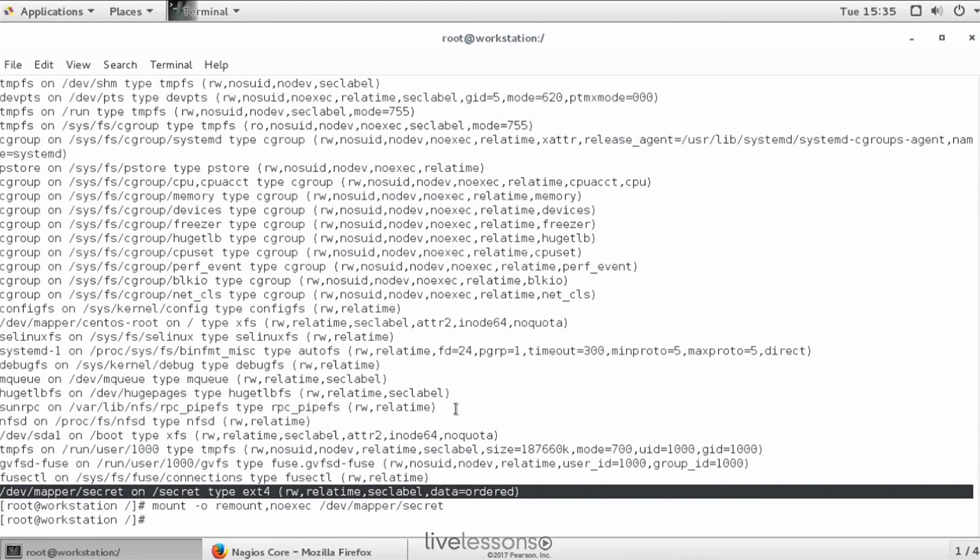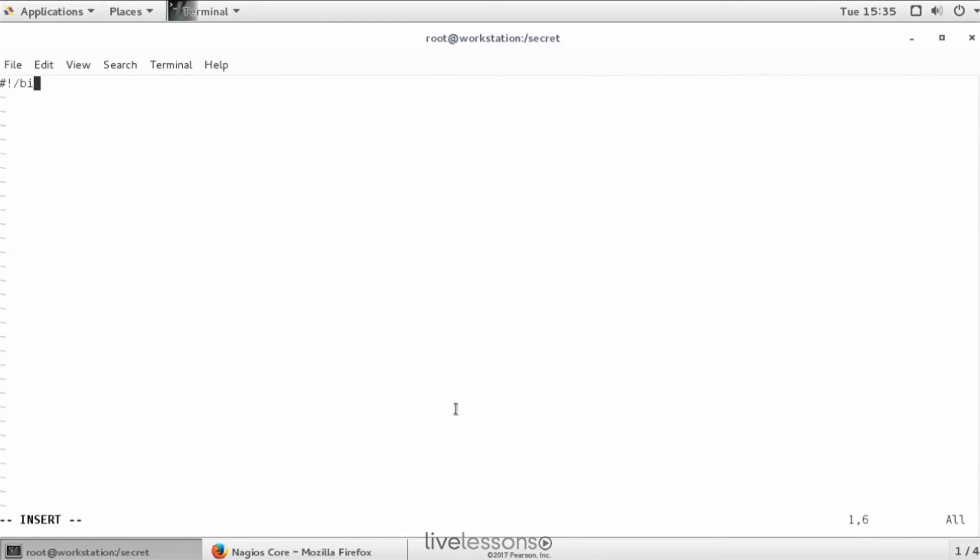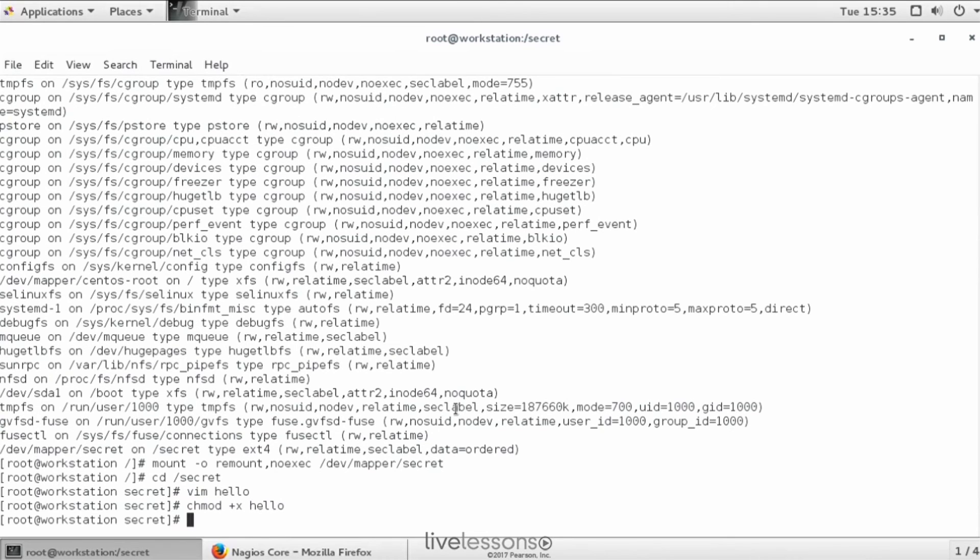Now this devmapper secret is mounted on slash secret. So let's write a small shell script. Let's make it executable, and let's run it.